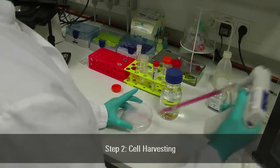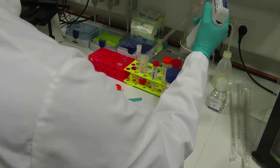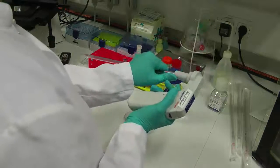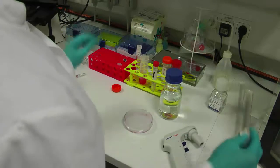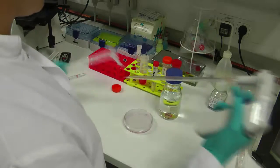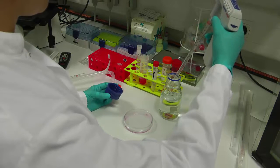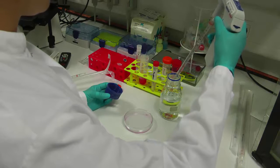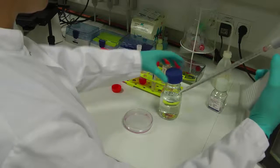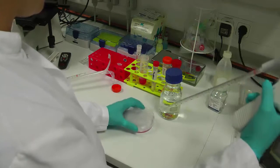Pipet off the medium from cells into a waste container. Carefully wash cells up to 3 times with 5-10 ml pre-warmed PBS without calcium and magnesium to get rid of the fetal bovine serum in the residual culture media. FBS will inhibit the trypsin.